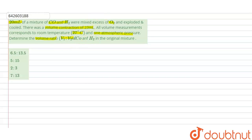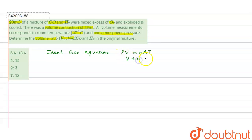All volume measurements correspond to room temperature and one atmospheric pressure. According to the ideal gas equation PV = nRT, pressure and temperature are constant and R is also a gas constant, so volume depends on n, that is the number of moles. So as the volume of carbon monoxide is V1 and volume of hydrogen is V2.